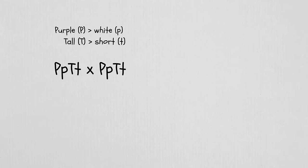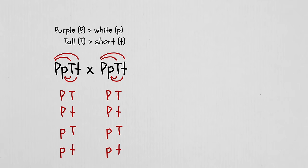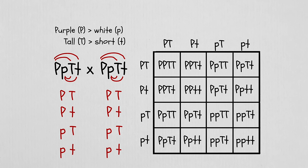You can also complete genetic problems that follow two traits in a dihybrid cross. Sticking with peas, imagine a cross between two heterozygous parent plants where purple is dominant to white and tall is dominant to short. We foil the parent genotypes to get each of their gametes and distribute them into the offspring boxes. A heterozygous cross needs a 16-box square and will produce a phenotypic ratio of 9:3:3:1.